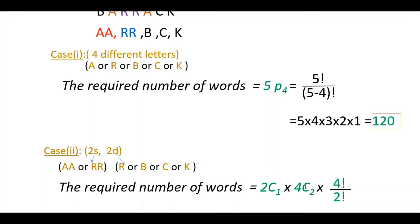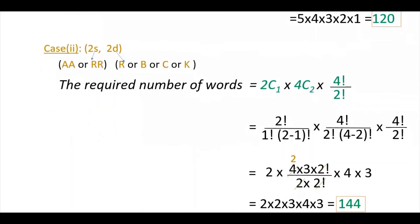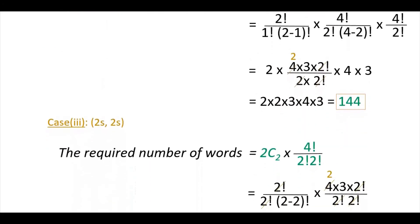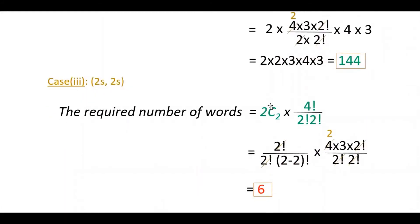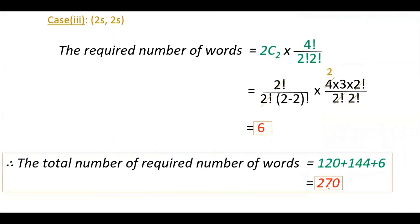For Case 2, multiply combinations by permutations: 4!/2! because two letters are repeating. The required number of words is 2C1 × 4C2 × 4!/2! = 144. For Case 3, two same and two same: here there are only two groups, so choose both groups: 2C2. Permutations are 4!/(2!×2!) = 6. Adding all cases: 120 + 144 + 6 = 270 total words.